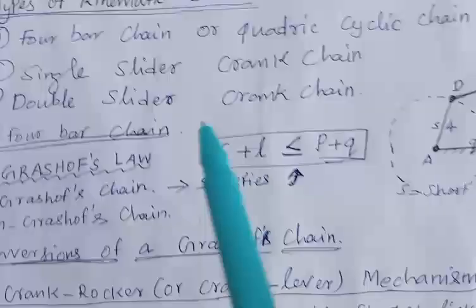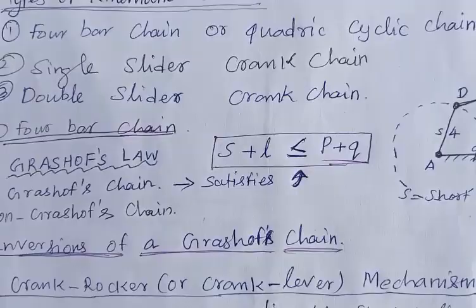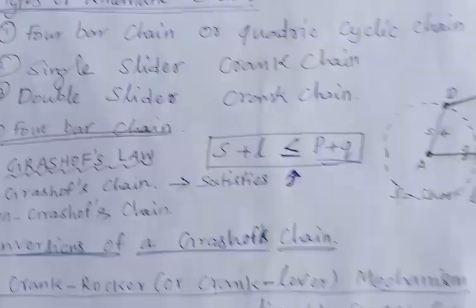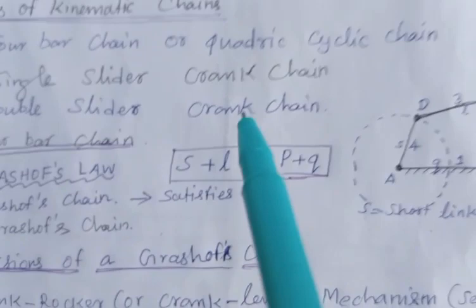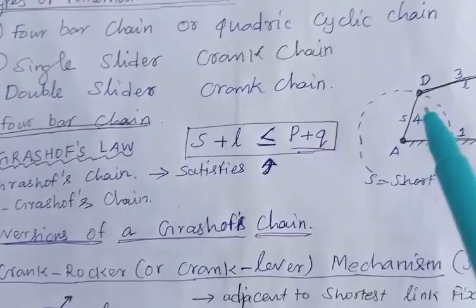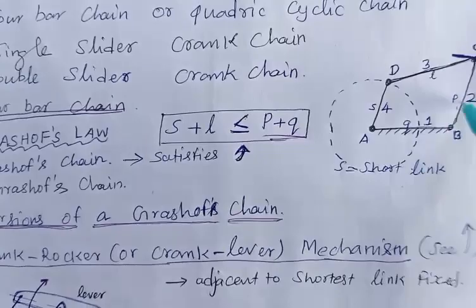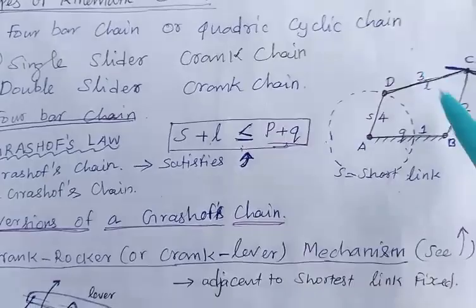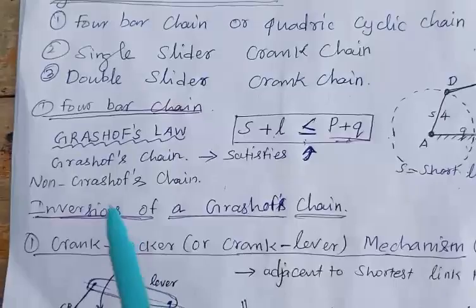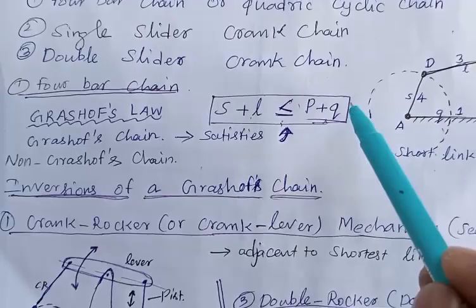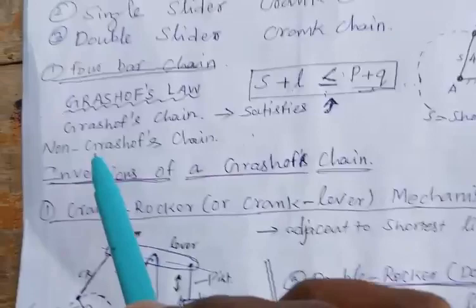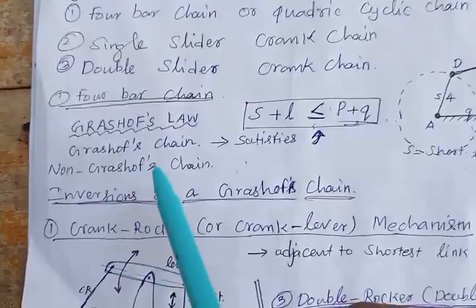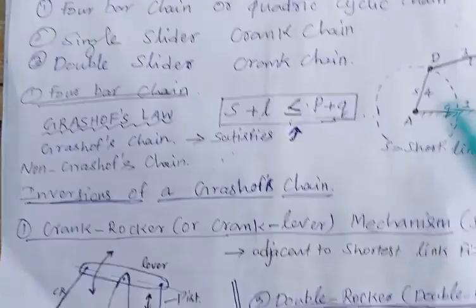Grashof's law is used to identify the 4-bar chain. Grashof's law states: the shortest plus longest link length must be less than or equal to P plus Q, where P and Q are the other two link lengths. A 4-bar chain satisfying S + L ≤ P + Q is called a Grashof chain; one that does not satisfy this law is called a non-Grashof chain. Grashof's law is very important for finding the inversions of the 4-bar chain.